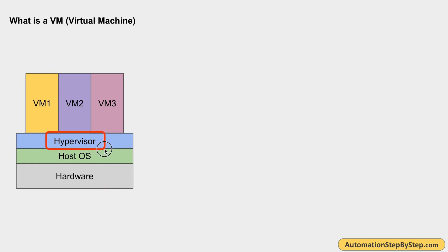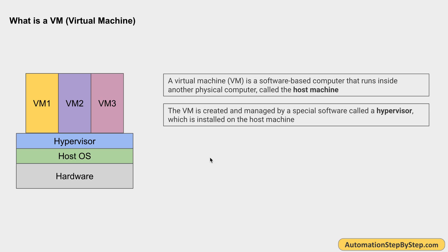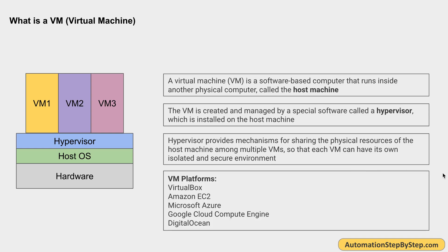There is a software called Hypervisor. Hypervisor takes care of creating and managing virtual machines on our host system. We can create one or multiple virtual machines — they are completely isolated, can run separate operating systems, and we can install separate environments, programs, and applications. These VMs use the hardware resources of the host system — CPU, hard disk space, memory — and Hypervisor handles resource allocation and sharing. So a virtual machine is a software-based computer that runs inside another physical computer, and there are cloud providers like VirtualBox, Amazon EC2, Microsoft Azure, Google Cloud Compute Engine, and DigitalOcean.